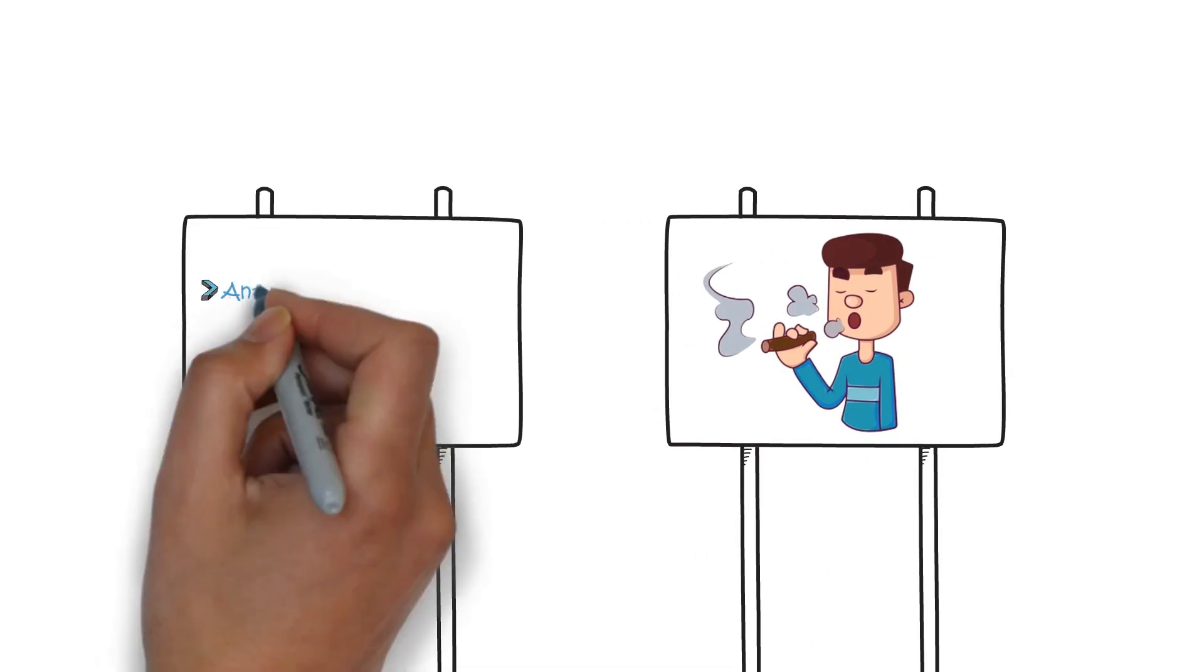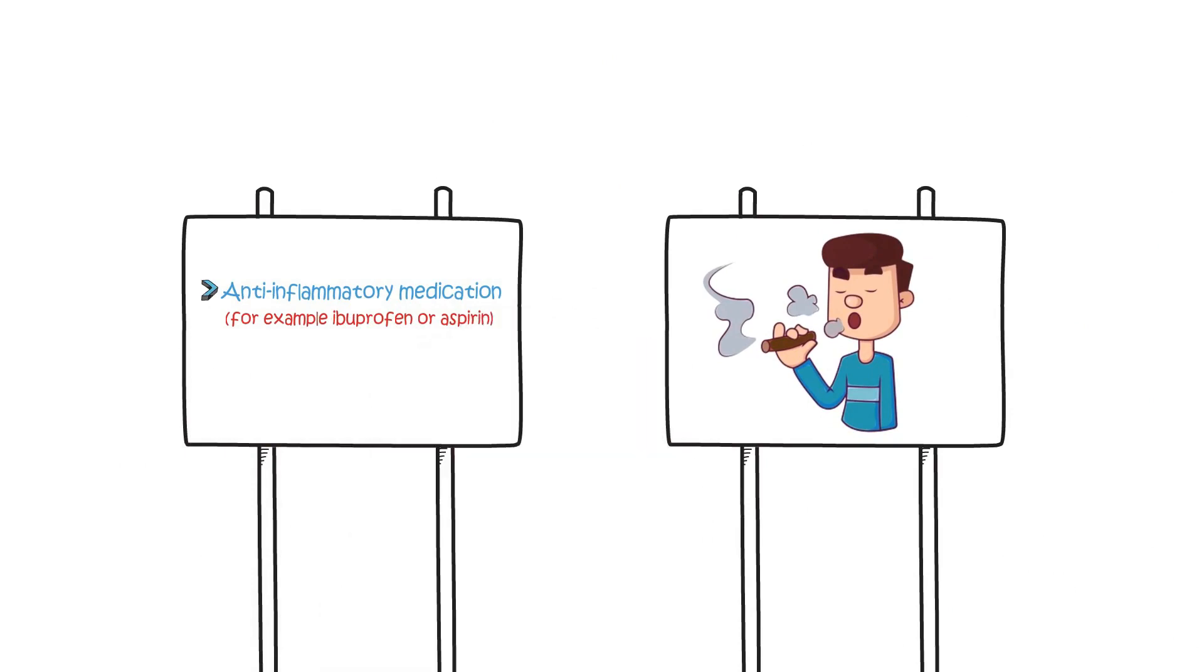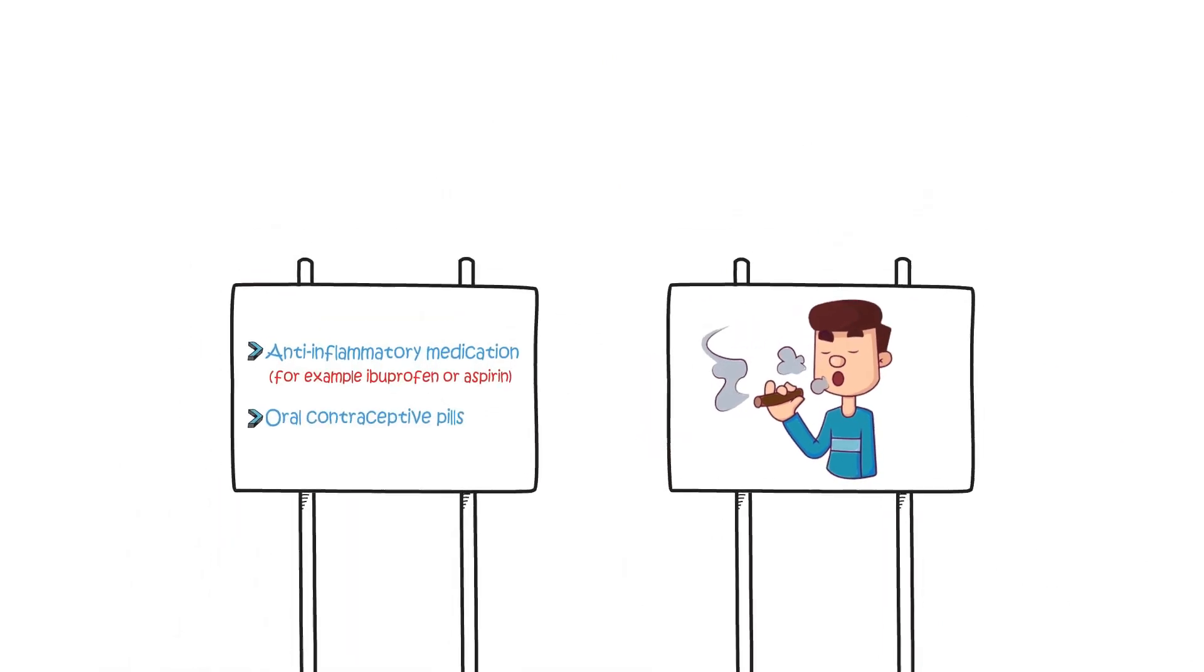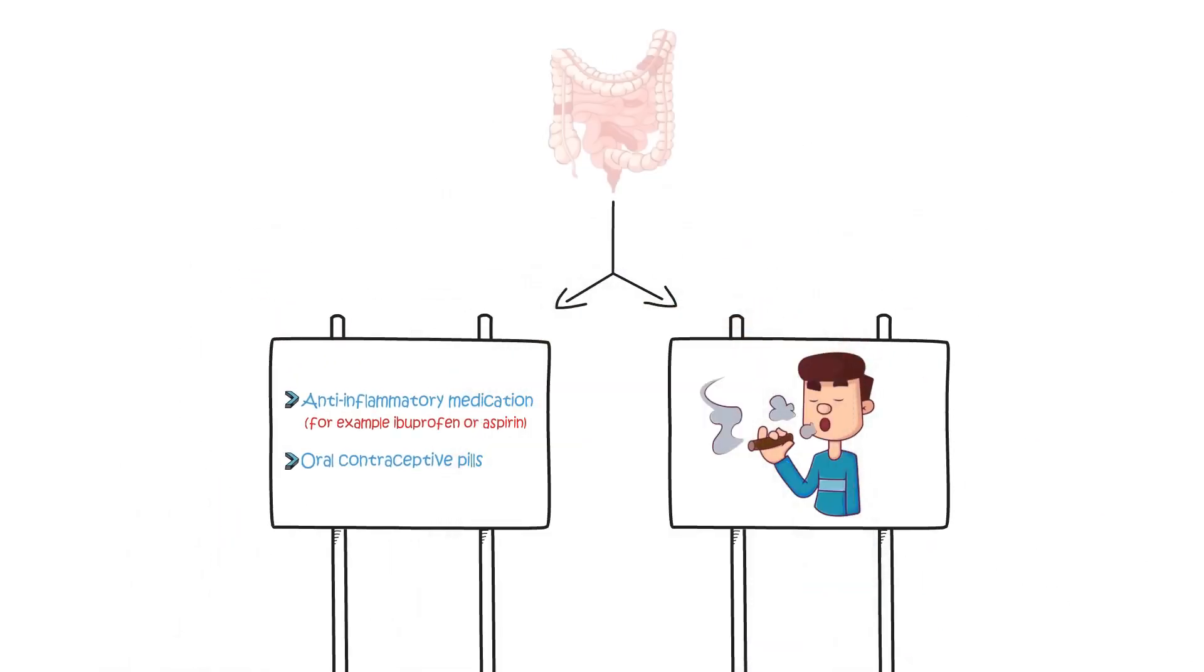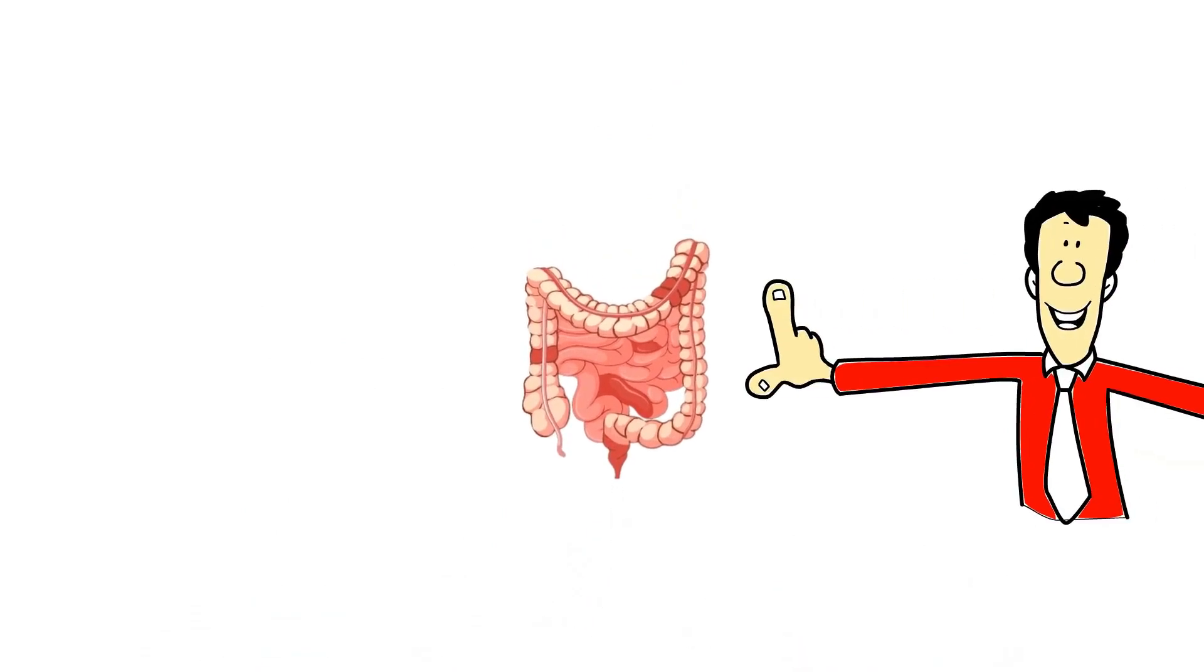It is more common and more severe in smokers. Medications such as anti-inflammatory medication, for example ibuprofen or aspirin, and oral contraceptive pills are also thought as potential triggers of Crohn's. So, while we don't have all the answers just yet, it's clear that there are many different potential factors that can contribute to the development of Crohn's.